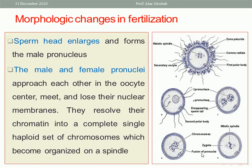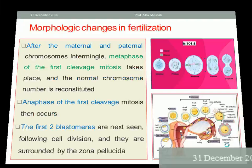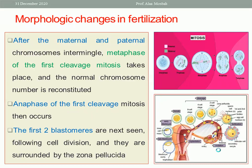A mitotic spindle forms. After the maternal and paternal chromosomes intermingle, the metaphase of the first cleavage mitosis takes place and the normal chromosome number is reconstituted. The stages of mitosis proceed: the pronuclei at metaphase — chromosomes collecting at the center — then anaphase, with sister chromatids separating to each side.